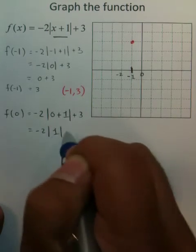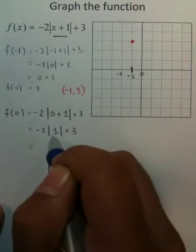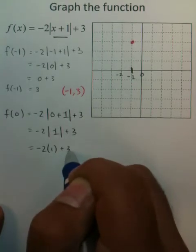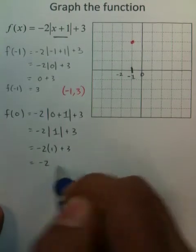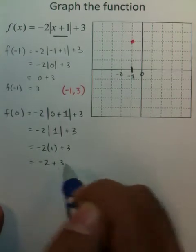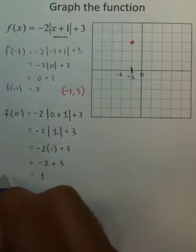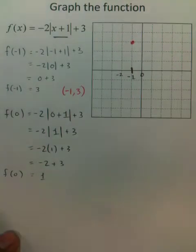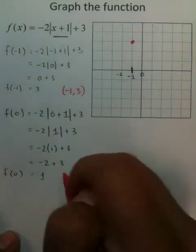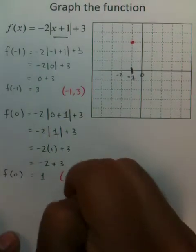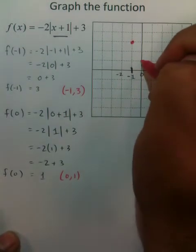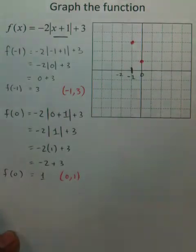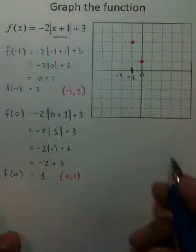For x=0: 1 plus 0 is 1, absolute value of 1 is 1, times negative 2 is negative 2, adding 3 gives you 1. So the coordinate is 0 comma 1.